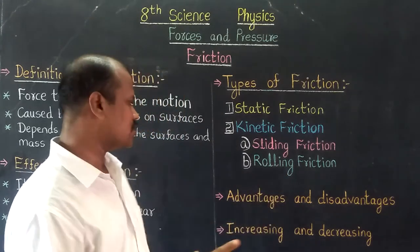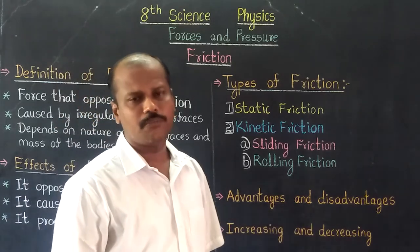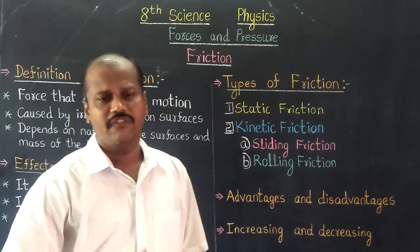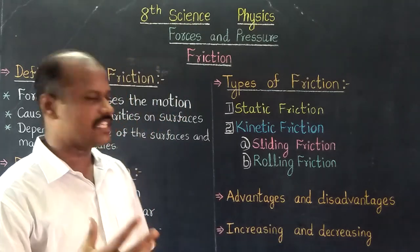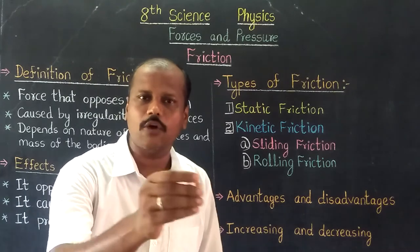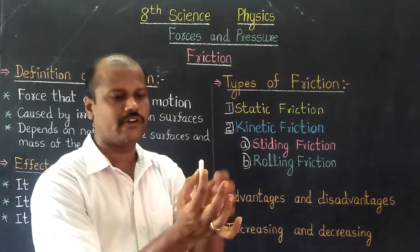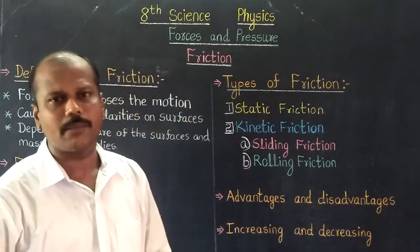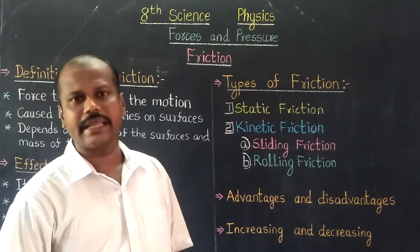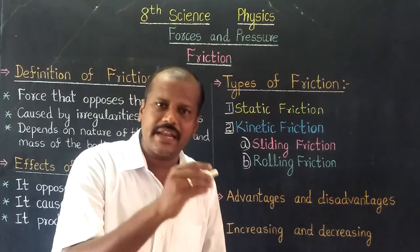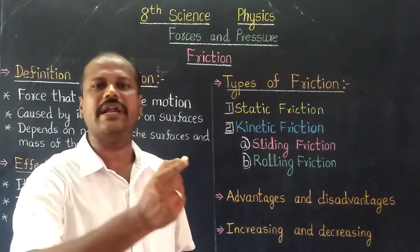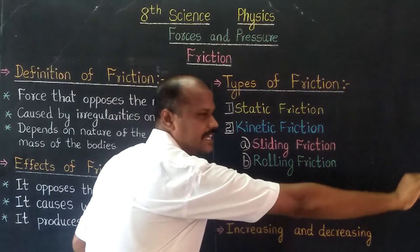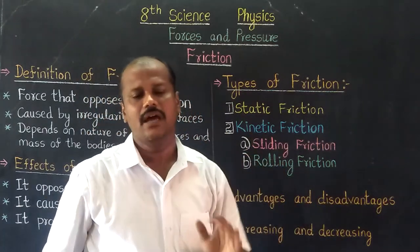Rolling friction is the least friction. Friction has advantages and disadvantages. Friction advantages: we can hold any object in our hand due to friction. We can walk on the road due to friction. We can write with a pen on paper. The blackboard and chalk also use friction.